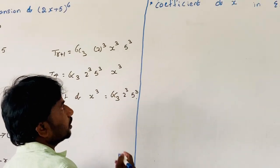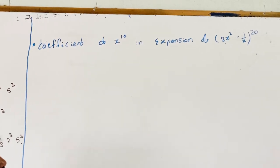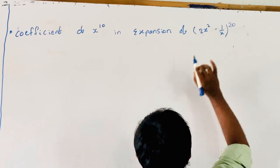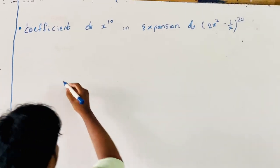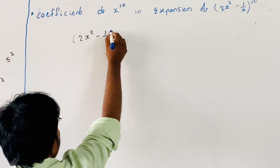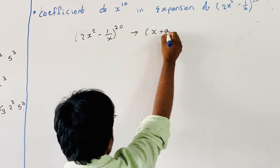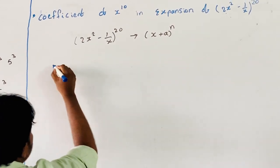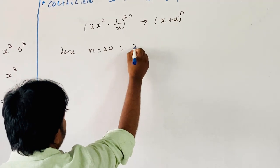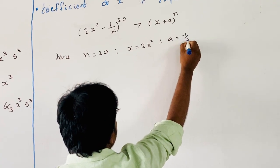Now, observe the next example. Find the coefficient of x¹⁰ in the expansion of (2x² − 1/x)²⁰. Here, comparing with (x + a)ⁿ, N is equal to 20, x is equal to 2x², and a is equal to −1/x.